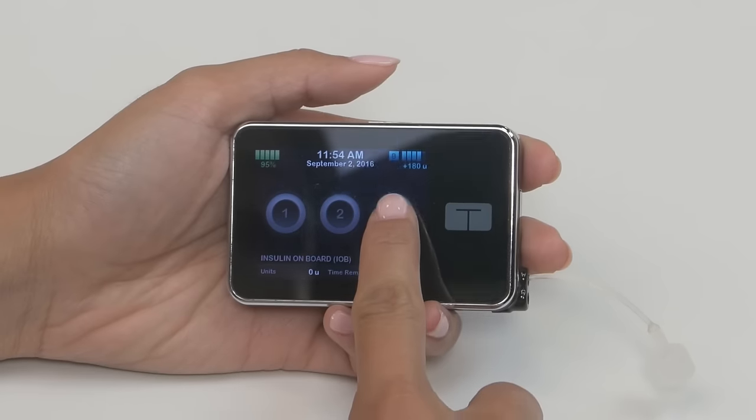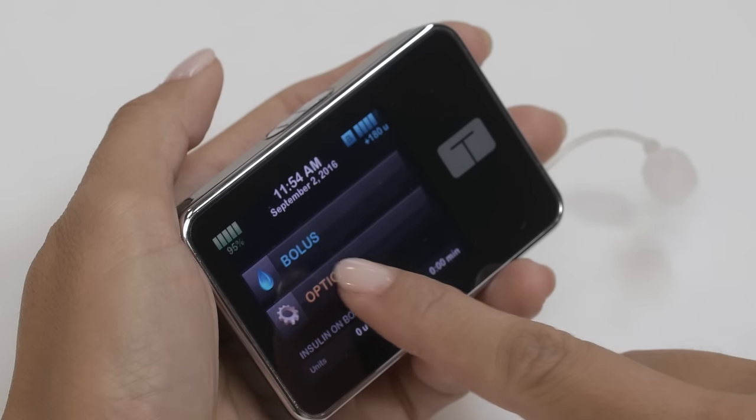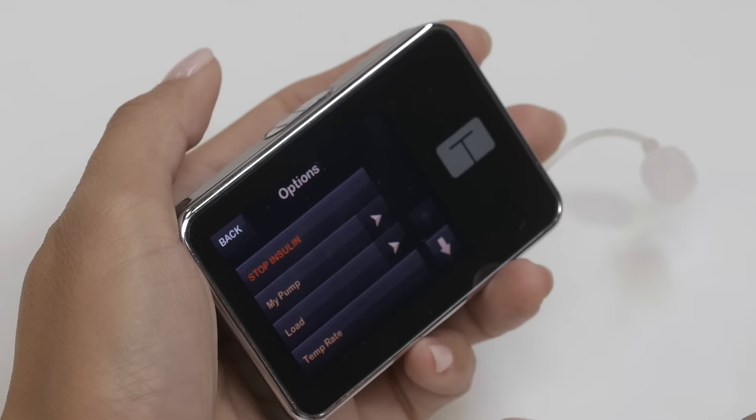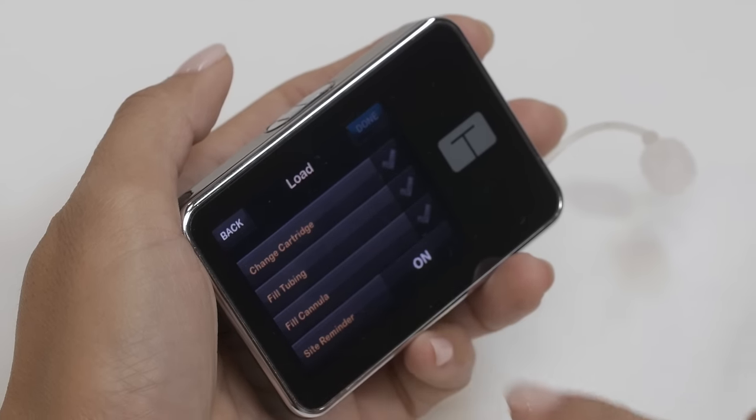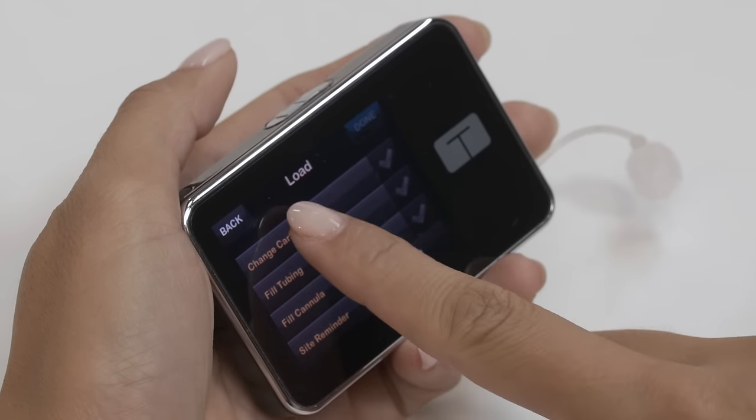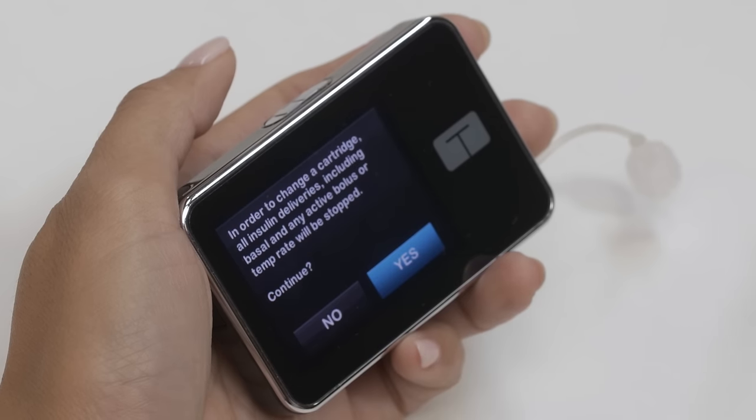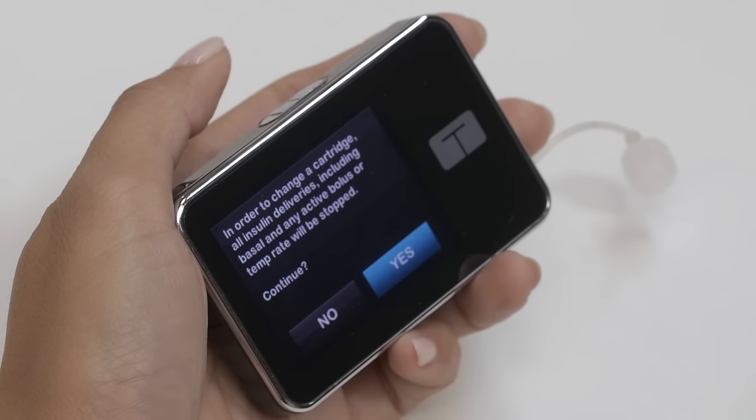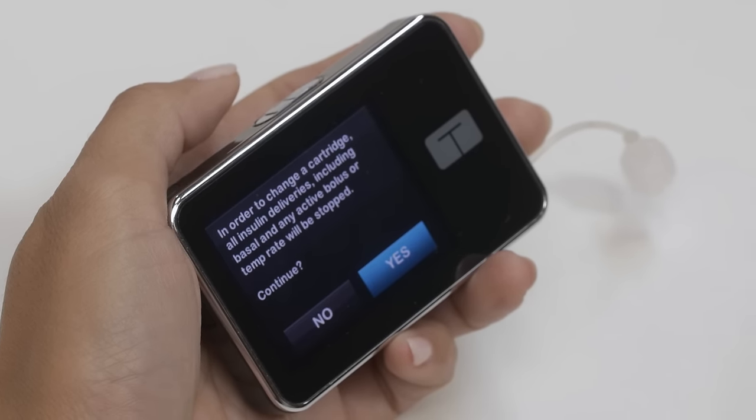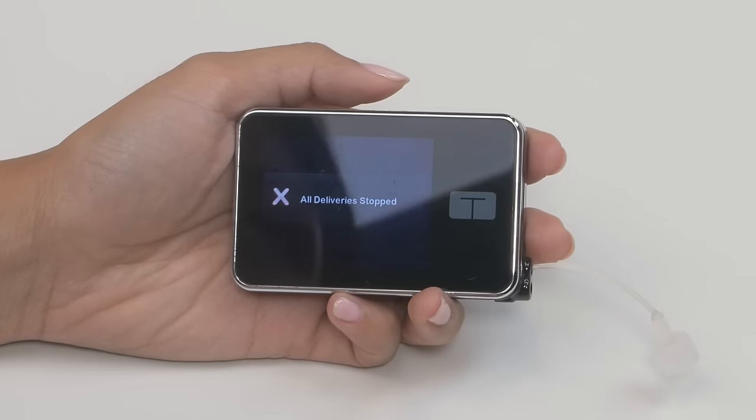Now turn on and unlock your pump and from the home screen tap options, then tap load. Next tap change cartridge. The pump will tell you that all deliveries will be stopped, which is fine since you don't want to be trying to pump while you're changing your cartridge, so tap yes to continue.